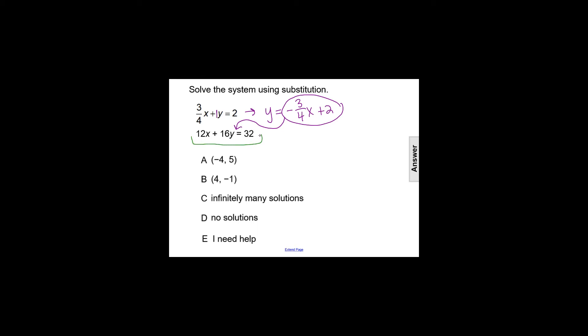For 12x plus 16y equals 32, we'll end up with 12x plus 16, now not times y, but times the quantity negative 3 fourths x plus 2, and then that equals 32.